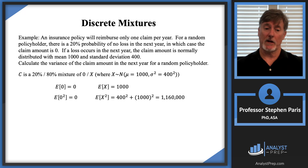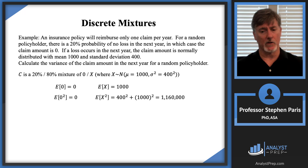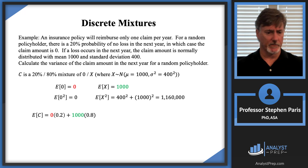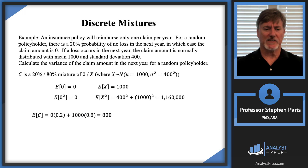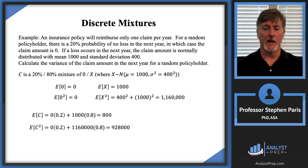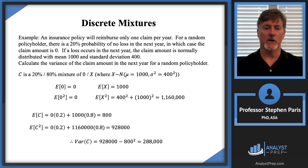I seek the variance but can't mix it directly, so I mix first and second moments separately. The mixed first moment is 20%(0) + 80%(1000) = 800. The mixed second moment is 20%(0) + 80%(1,160,000) = 928,000. Then the variance is the second moment minus the square of the first moment: 928,000 − 800² = 288,000.